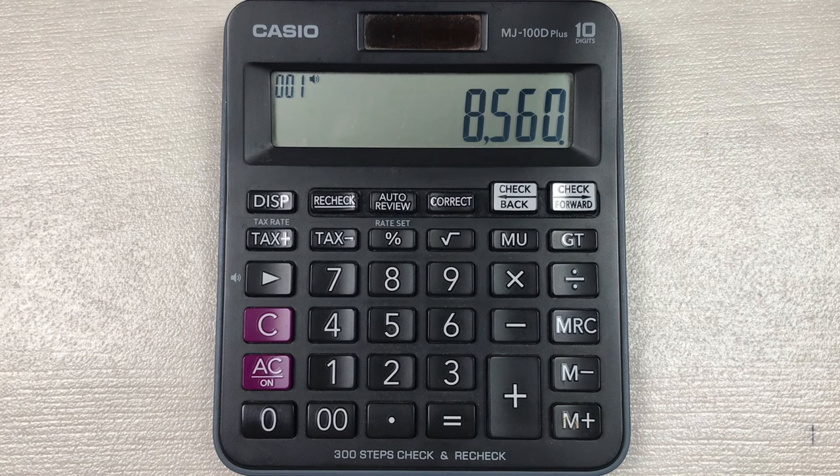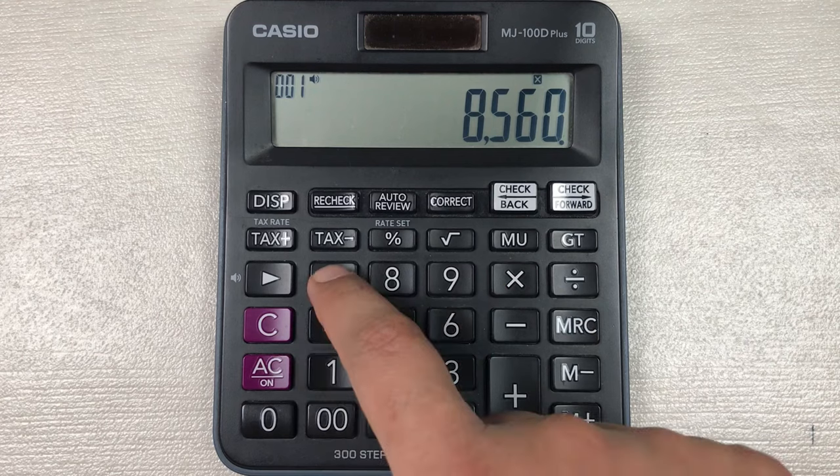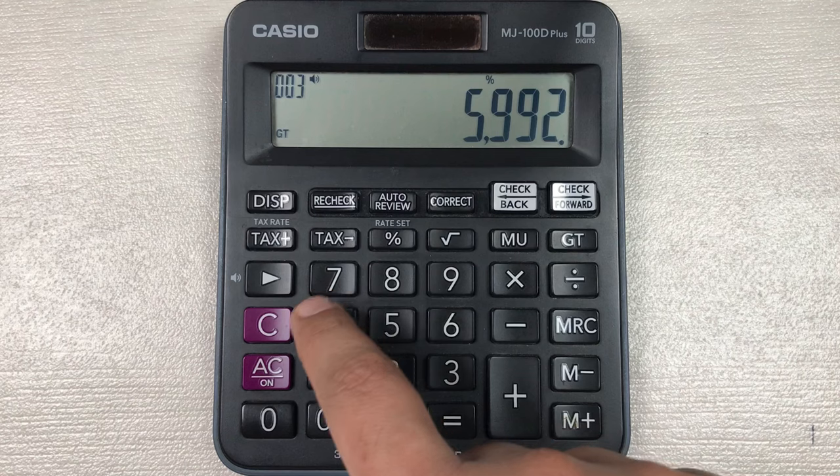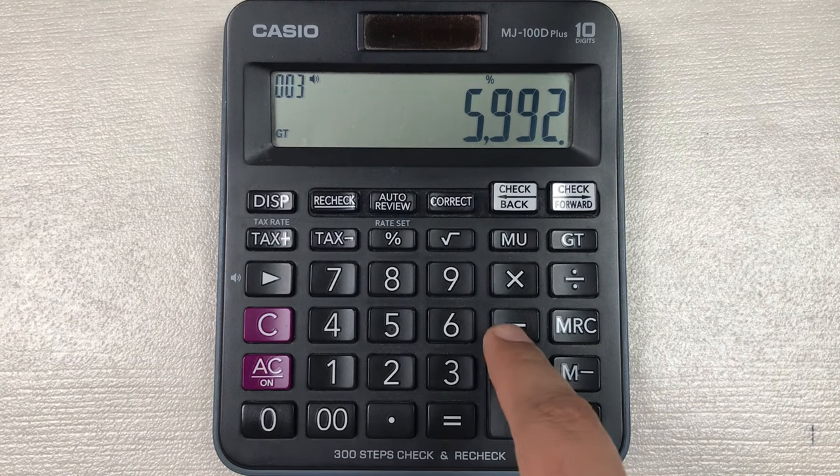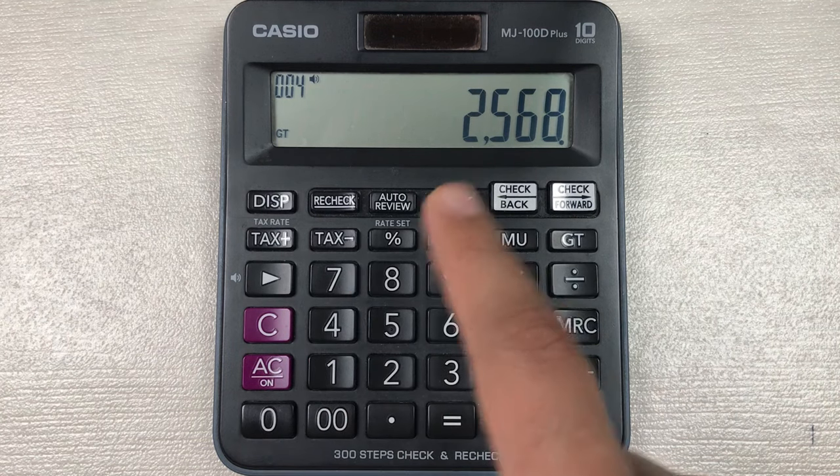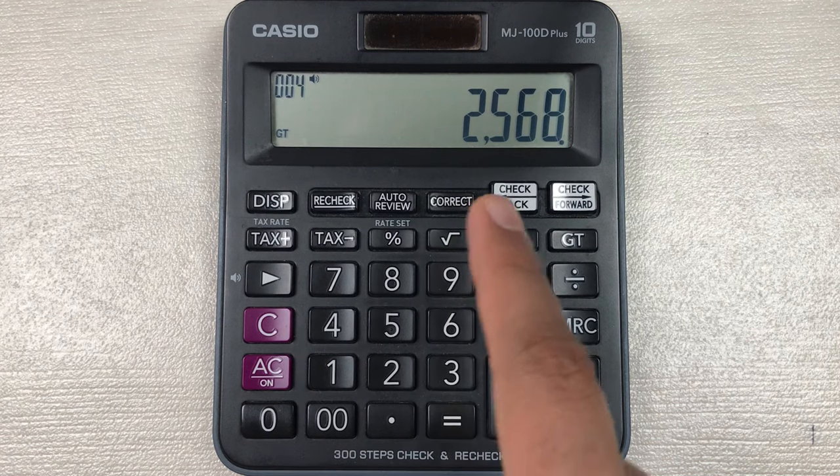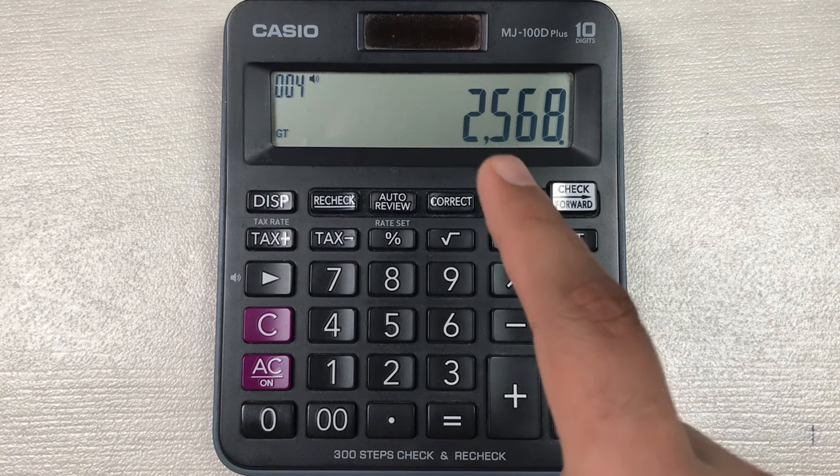You have to multiply it with 70, then you have to press this percentage button, and then in last you have to press this minus button. So here is the final answer: 2568 is the final price after 70 percent off.